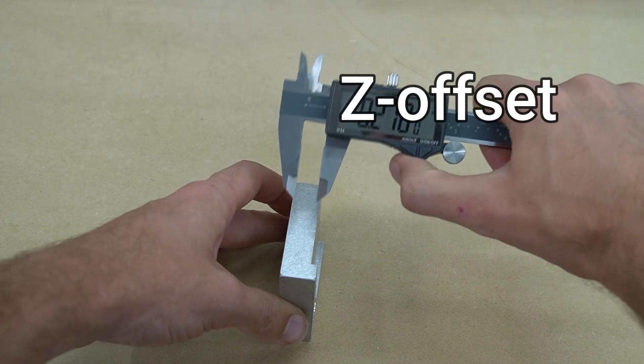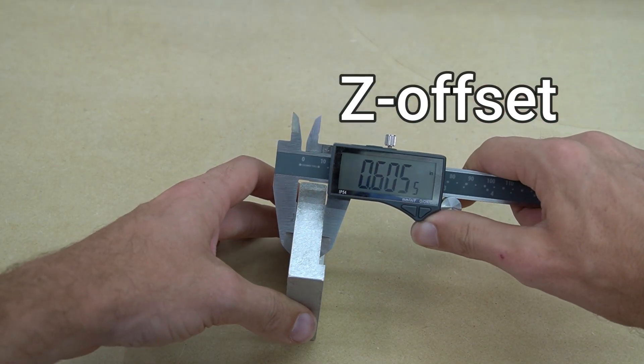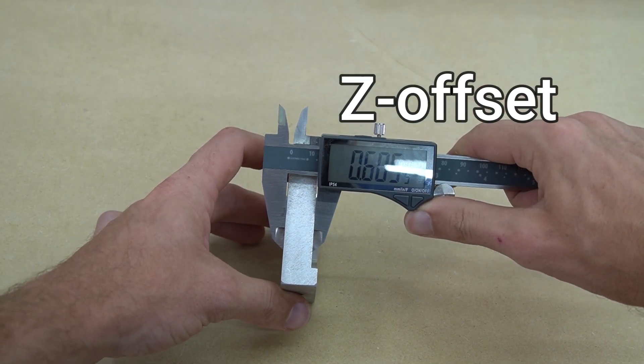Lastly, we'll flip the probe on its side and measure the recessed area to give us our Z offset, 0.6055.